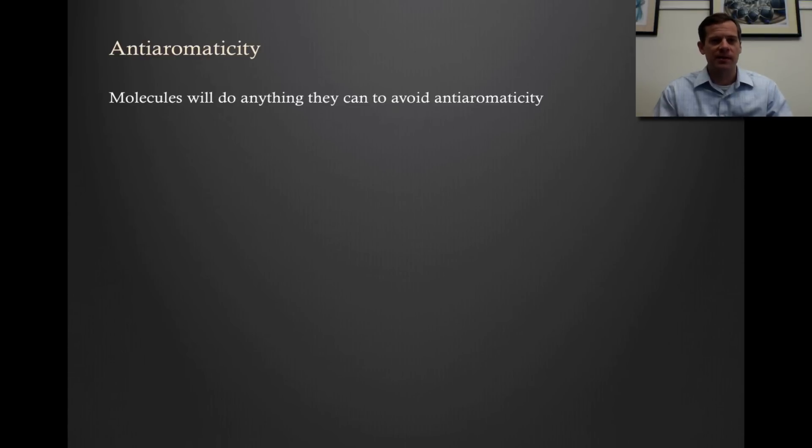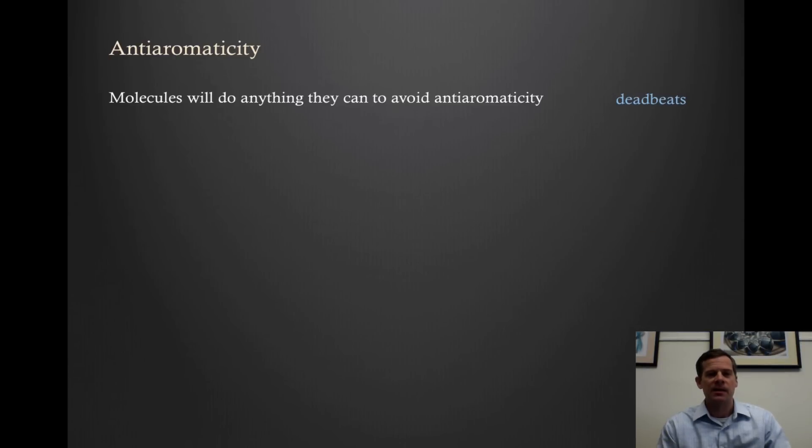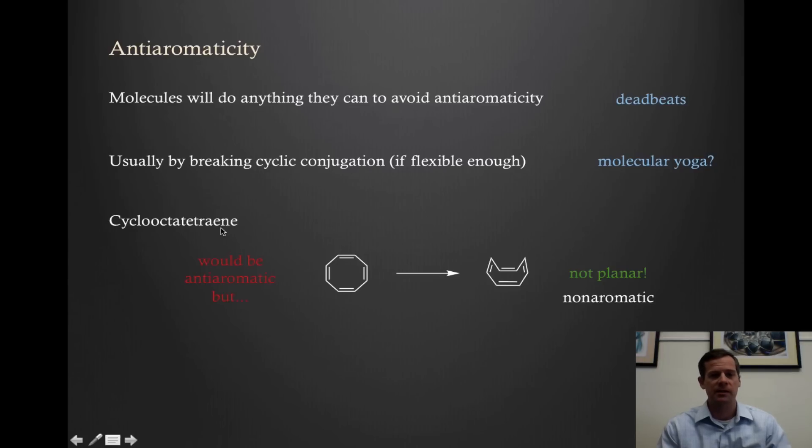This is a general principle that molecules will basically do anything they can to avoid antiaromaticity. It's an energetic penalty. They do not want to exist in a form that makes them antiaromatic. A lot of times what they will do is try to break the conjugation by rotating some bonds if they're flexible enough. We've already seen one example where this can happen with cyclooctatetraene. If this was a planar fully conjugated system, we would have eight electrons and that's an antiaromatic number. So this would actually be antiaromatic if it was planar. That's exactly why it is not planar.